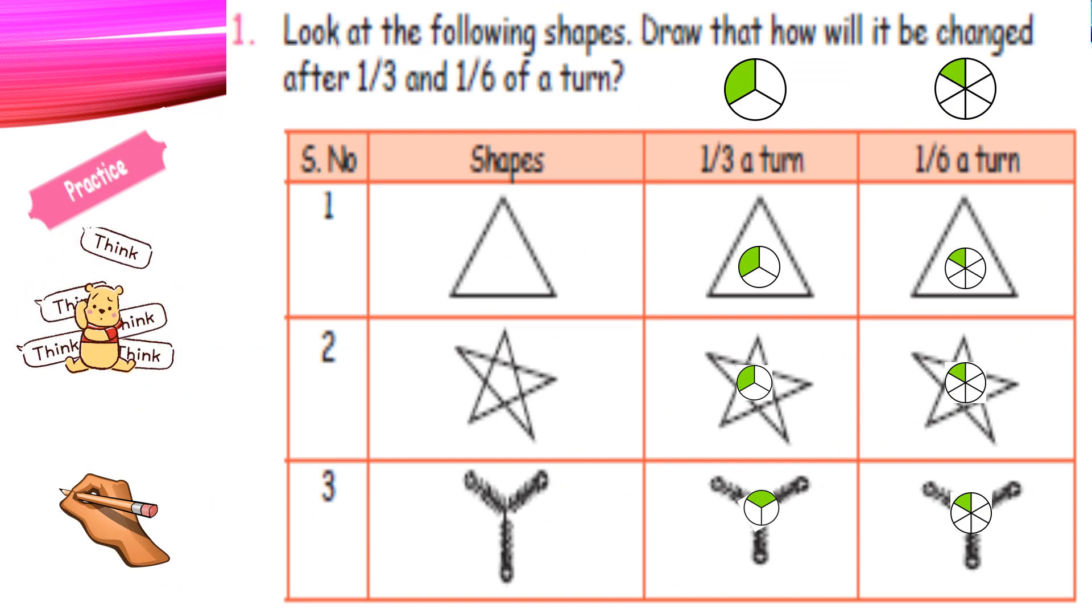One more practice sum is given. First question. Look at the following shape. Draw that. How will it be changed after one third and one sixth of a turn? Look at the shape below. There are triangle, star and then one image. So what to do? We have to draw. In the triangle, one third portion turn, how will it look? And that shape we have to draw. Can you understand? I turn and then show to you. Shall we see that? Look at this triangle. Star. So one third turn, all the three shapes are rotated. So in one third, we will get the same shapes only.